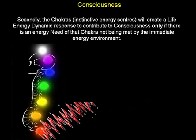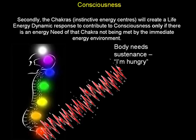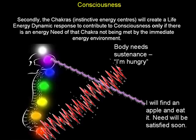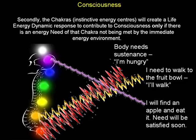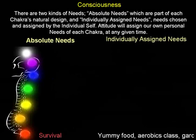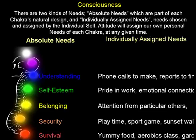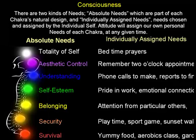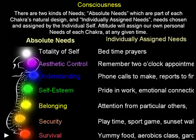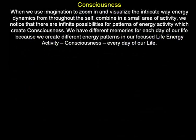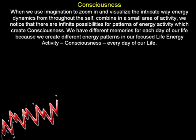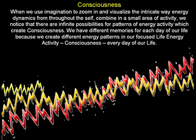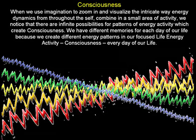Secondly, the chakras will create a life energy dynamic response to contribute to consciousness only if there is an energy need of that chakra not being met by the immediate energy environment. There are two kinds of needs: absolute needs, which are part of each chakra's natural design, and individually assigned needs — needs chosen and assigned by the individual self. Attitude will assign our own personal needs of each chakra at any given time. When we use imagination to zoom in and visualize the intricate way energy dynamics from throughout the self combine in an area of activity, we notice that there are infinite possibilities for patterns of energy activity which create consciousness.